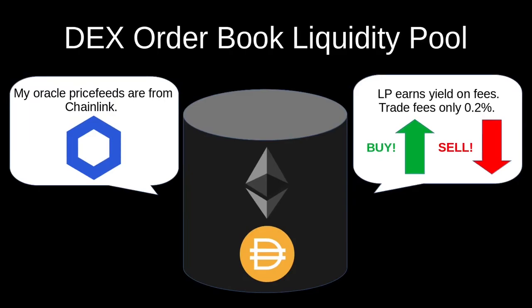Today we're going to go over how to build a decentralized exchange that uses an order book, as opposed to a bonding curve which was covered in another video. The way we're going to do this is by using Chainlink, which will give us on-chain price feed data securely.